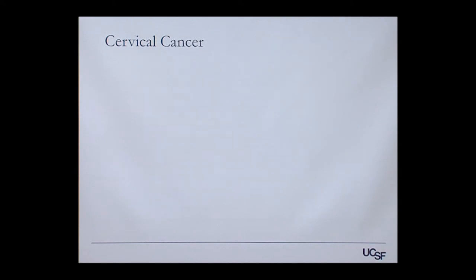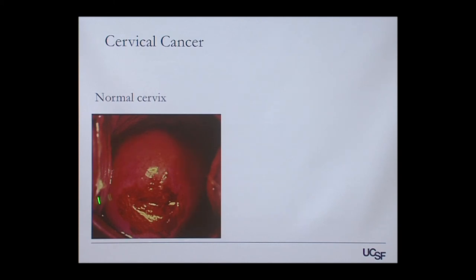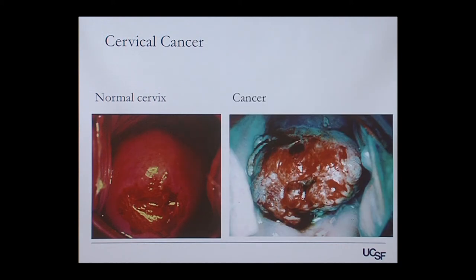The cervix is visible and accessible for screening, and in cases of advanced cancer it is obvious to the naked eye. This is a very unique situation compared to most cancers. We look at the cervix during a pelvic exam to make sure it looks normal. While it's unusual to see advanced cervical cancer presentations in our country, it is actually very common in low-resource settings.